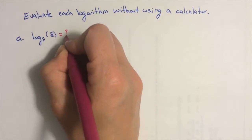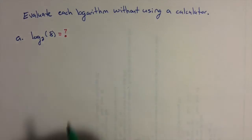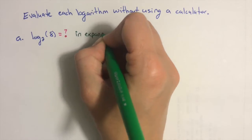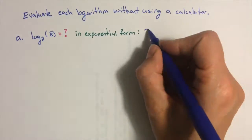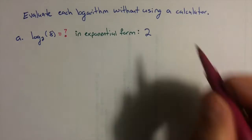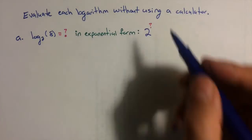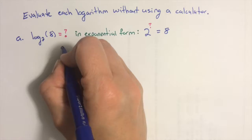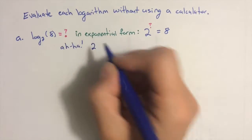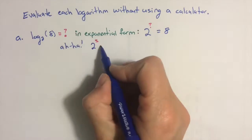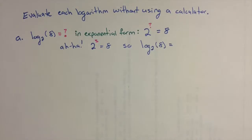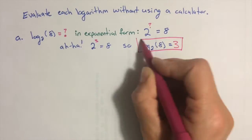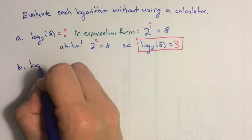Our first example is log base 2 of 8. We ask ourselves: log base 2 of 8 equals what? In exponential form, that's 2 to the what equals 8. I know that one — 2 cubed is 8, so log base 2 of 8 must be 3.